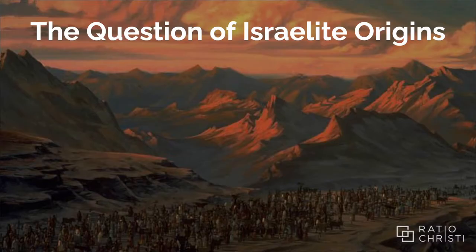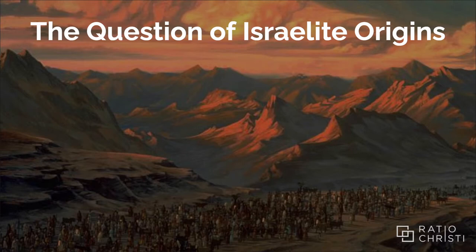That ends our focus on evolution and creationism. We're now going to turn to a new question: the question of Israelite origins. The biblical story of where the Israelite people came from is highly contentious, and it's described primarily in the rest of Genesis after chapter 11, the books of Exodus, Numbers, and then on into Kings. More specifically, we're going to focus on the Exodus and the conquest.